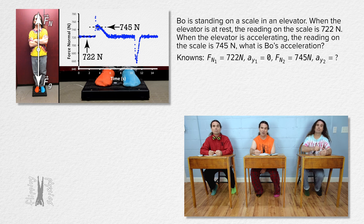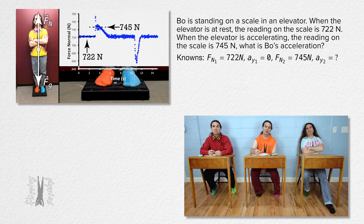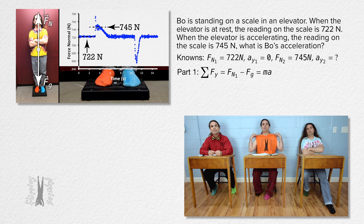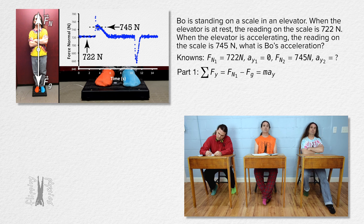Bobby, please sum the forces in the y-direction during part one when the elevator is at rest. For part one, the net force in the y-direction equals force normal one minus force of gravity, minus because the force of gravity is down. Net force always equals mass times acceleration — in this case, the acceleration in the y-direction for part one, which we know is zero. We can add force of gravity to both sides to show that force normal one equals force of gravity.